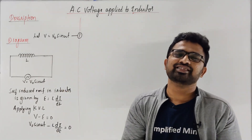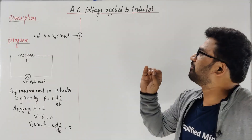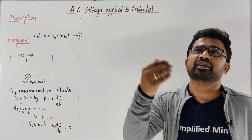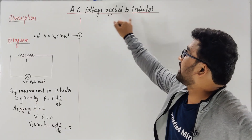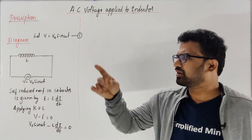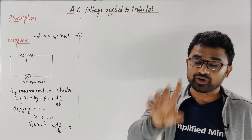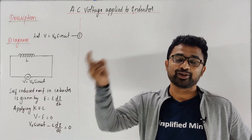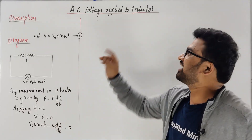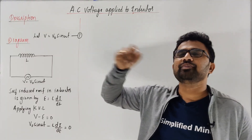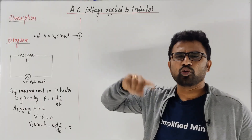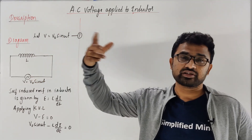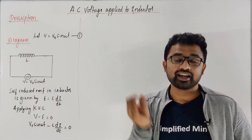Hello, welcome to Simplified Minds. So another very important topic and also an important example. Sometimes they ask for three marks, sometimes for five marks. They ask you AC voltage applied to the inductor, they can ask AC voltage applied to a capacitor. Not only that, it's also important for your LCR five-mark derivation. So: prove that when AC voltage is applied to an inductor, the voltage leads current by pi by two.